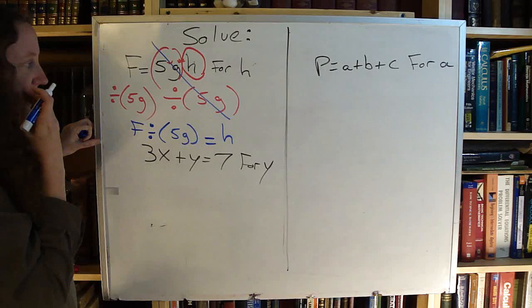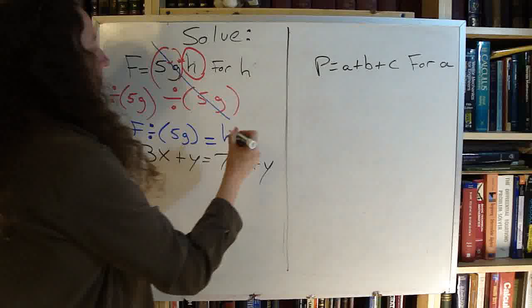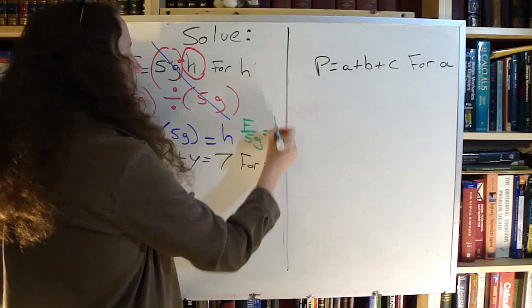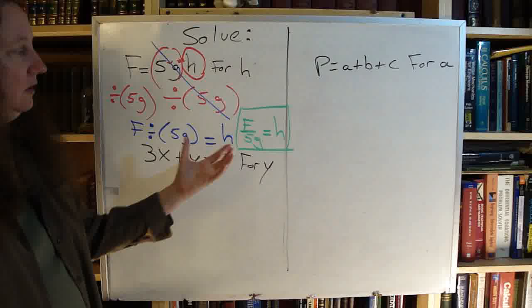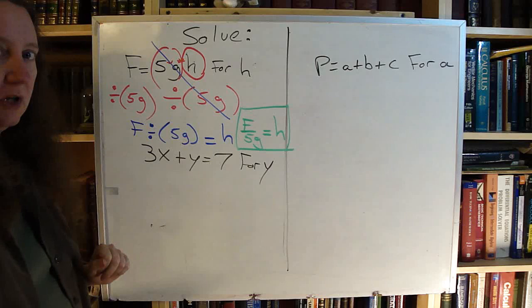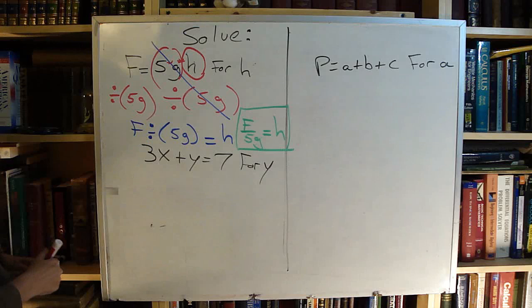That's one way of writing it. Another way of writing it is F over 5G equals H. The way I wrote it in green here is a shortened form and most teachers will prefer it written like that.